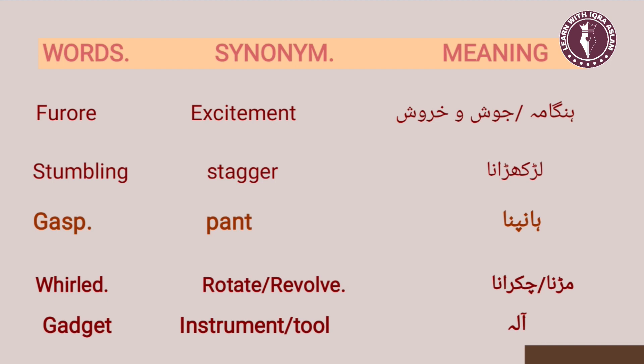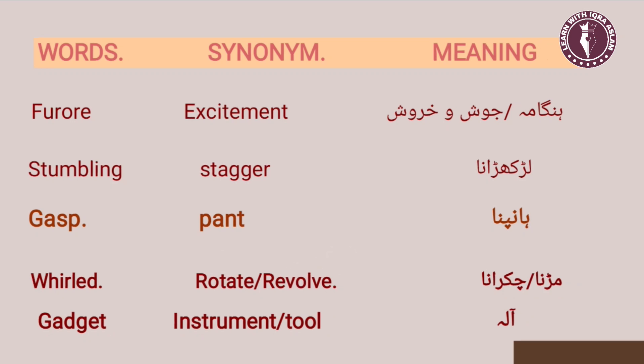Next word is 'gasp.' Gasp ka matlab hai haampna — jab aapka saans bahut zyada phool jata hai, toh is condition ko kehte hain haampna. Aur iska synonym hai 'pant.' Next word hai 'whirl.' Whirl kehte hain muurna ya chakrana, aur iska synonym hai 'rotate' ya 'revolve.' Next word is 'gadget.' Gadget kehte hain kisi bhi aale ko — jis tarha aapka mobile ek gadget hai, aapka laptop ek gadget hai. Aur iska synonym hota hai 'instrument' ya 'tool.'